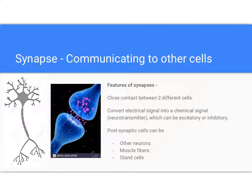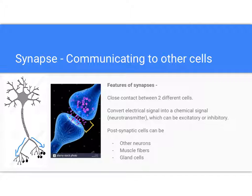Finally, as the electrical impulse flows to the end of the neuron farthest away from the cell body, it will reach the synapse. There, it must be converted into a chemical signal in the form of neurotransmitter so that it can pass through the gap between the two cells that form the synapse. The presynaptic cell releases packets of neurotransmitters that will be sensed by the dendrites of the postsynaptic cells.